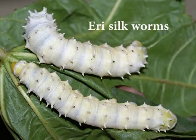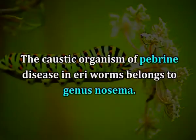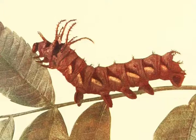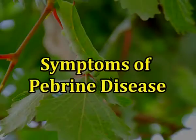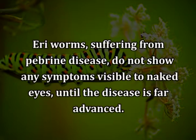Pebrine disease: Eri silkworms are subjected to pebrine disease exactly as their mulberry counterparts are. The causative organism of pebrine disease in eri silkworms belongs to the genus Nosema. The species, according to some, is not Bombycis. It is reported that pebrine spores of mulberry do not cause pebrine in eri worms, or vice versa.